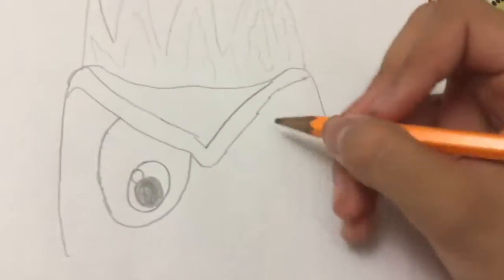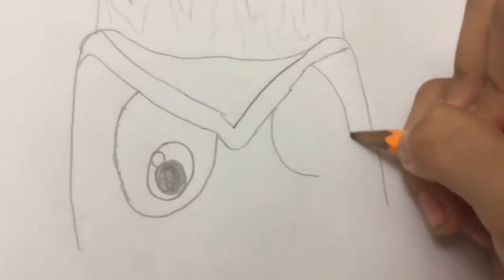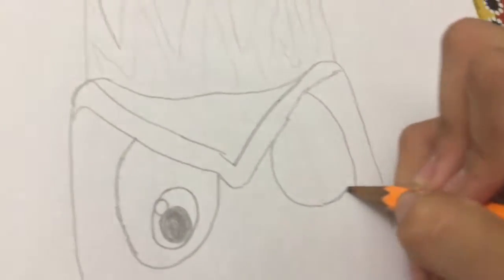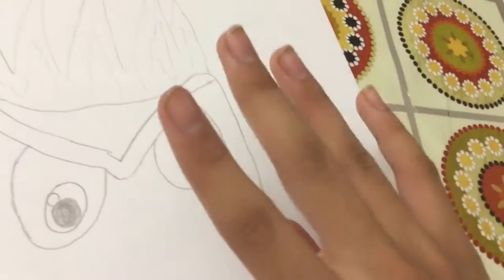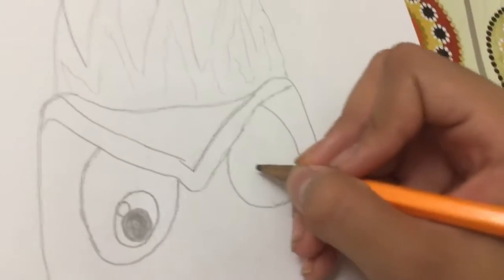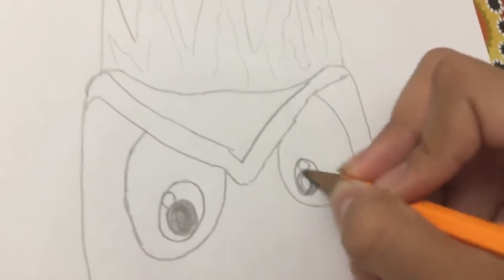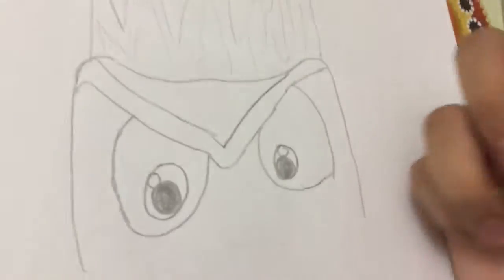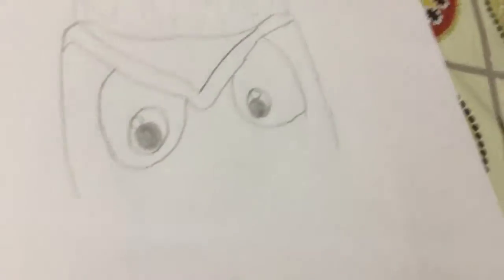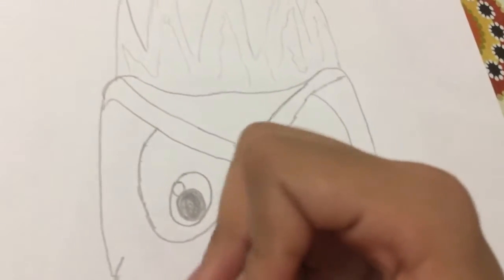Do the same on the other side, just make the eye a little bit bigger because you see this side more than that side. Next for Anger's mouth, well first I think we should extend his face a little bit more. That's better.